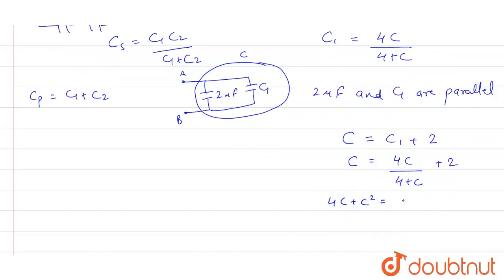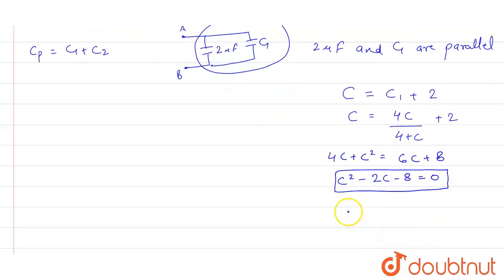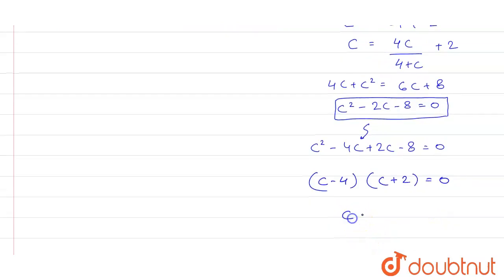We can write: C = 4C/(4 + C) + 2. When we solve this, it becomes 4C + C² = 6C + 8, which we can rewrite as C² - 2C - 8 = 0. So our quadratic equation is C² - 2C - 8 = 0. We can solve it using the quadratic formula or by middle term splitting.